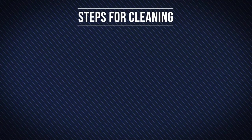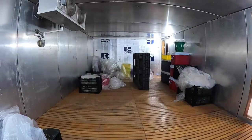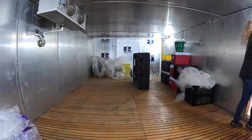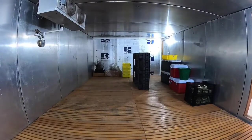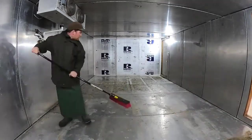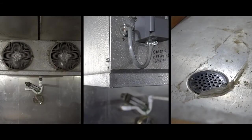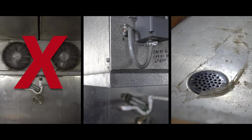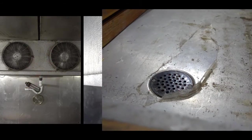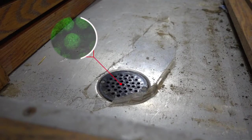Steps for cleaning: Prepare the area to be cleaned. Remove all produce. Clear all surfaces of visible debris by sweeping or using a high-pressure hose. Do not direct hoses towards condensers, drip pans, or floor drains, as these sites are known to harbor listeria.